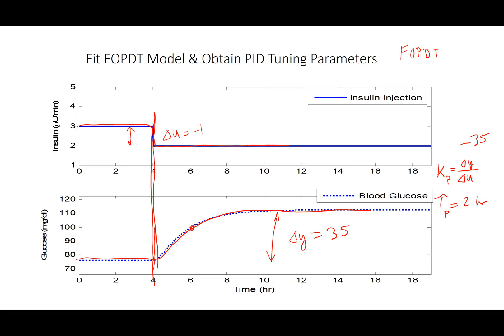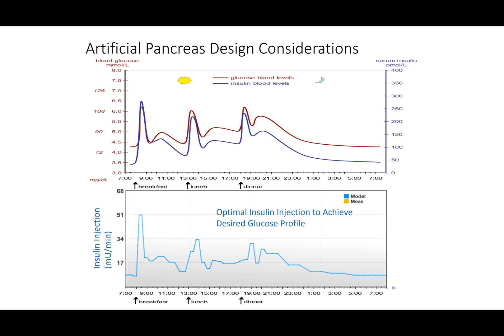We can also use optimization to fit this model. This is what we're going to need to come up with initial PID tuning parameters for this individual. Okay, and if we also use something called dynamic optimization, we can also optimize the insulin injection rate over the course of 24 hours to keep a patient into a kind of a normal operating mode. Instead of trying to reach a set point, we might be trying to emulate a healthy person instead.